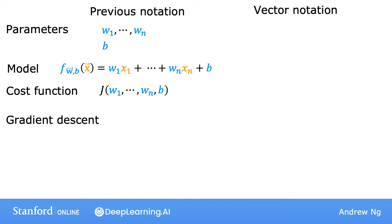Let's quickly review what multiple linear regression looks like. Using our previous notation, let's see how you can write it more succinctly using vector notation. We have parameters w1 to wn as well as b, but instead of thinking of w1 to wn as separate numbers,